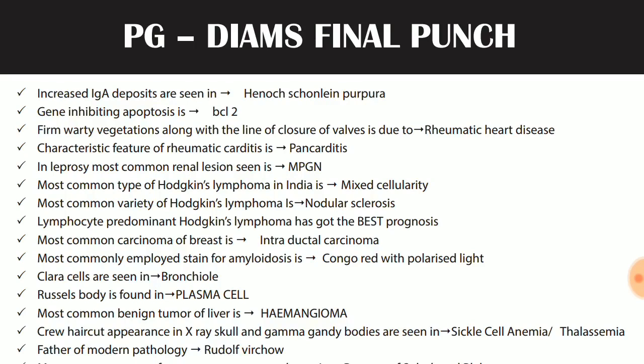Increased IgA deposits are seen in Henoch-Schönlein purpura. Gene inhibiting apoptosis is BCL2. Warty vegetations along with the line of closure of valves is due to rheumatic heart disease. Characteristic feature of rheumatic carditis is pancarditis. In leprosy, most common arena lesion seen is MPGN.